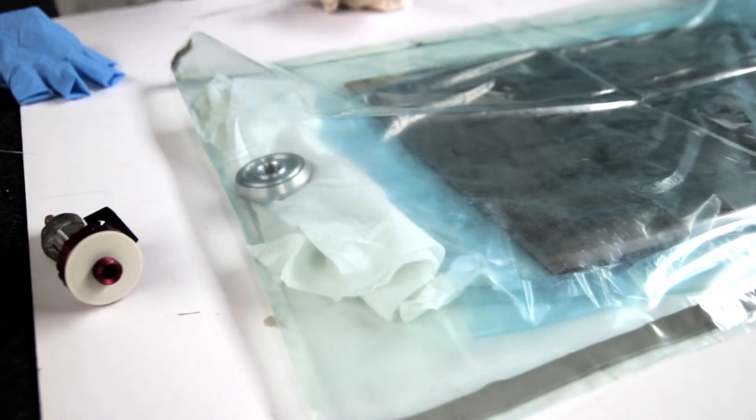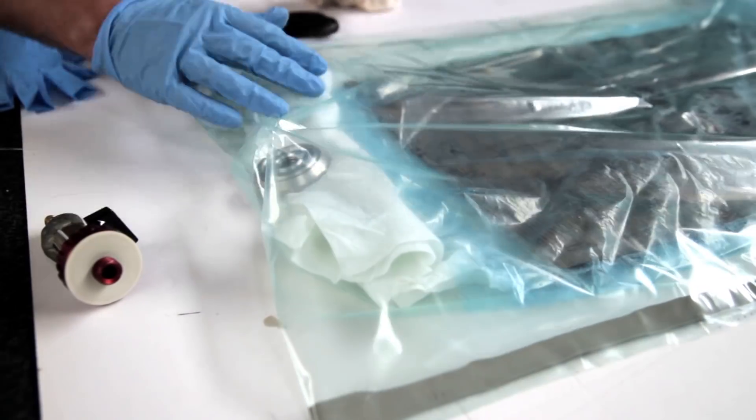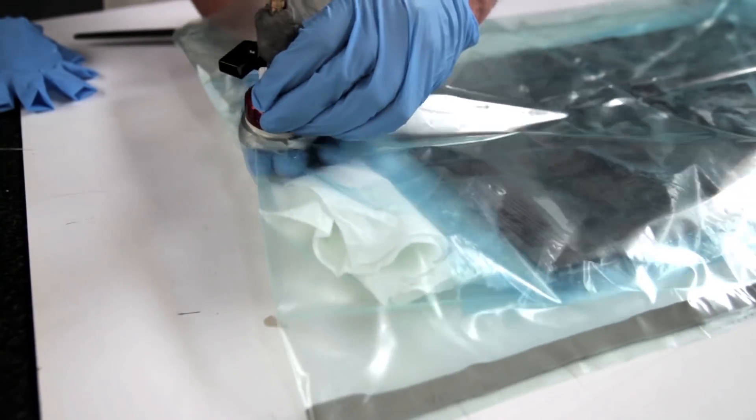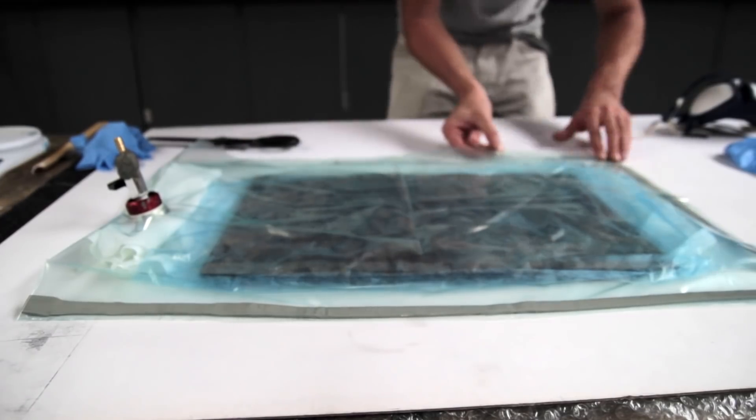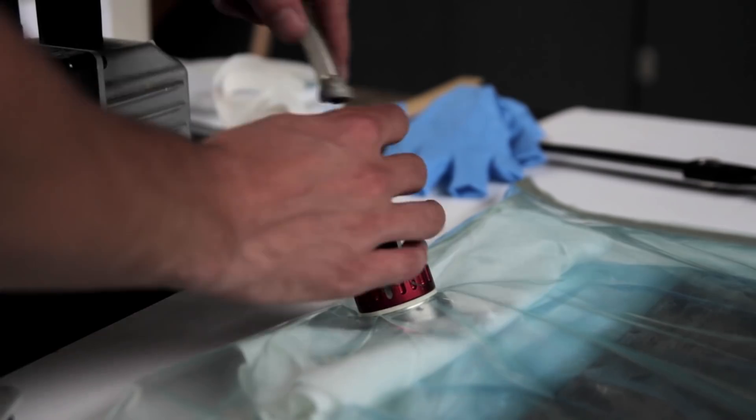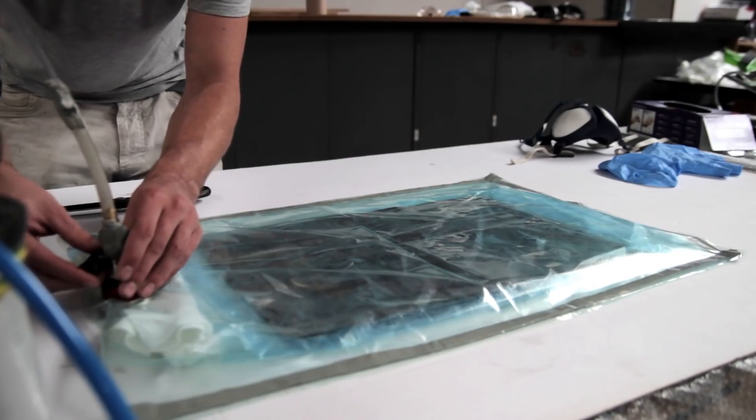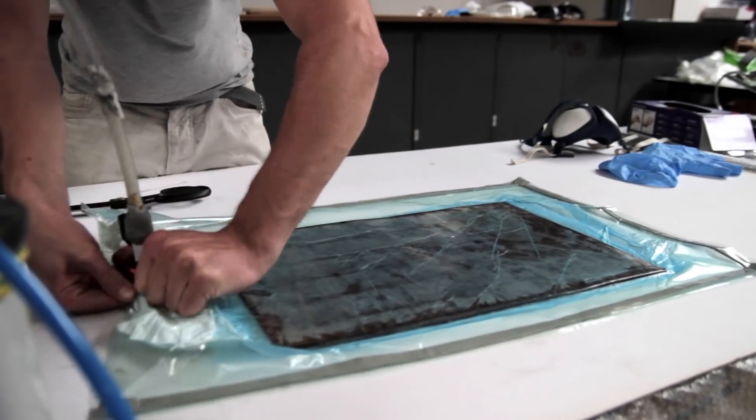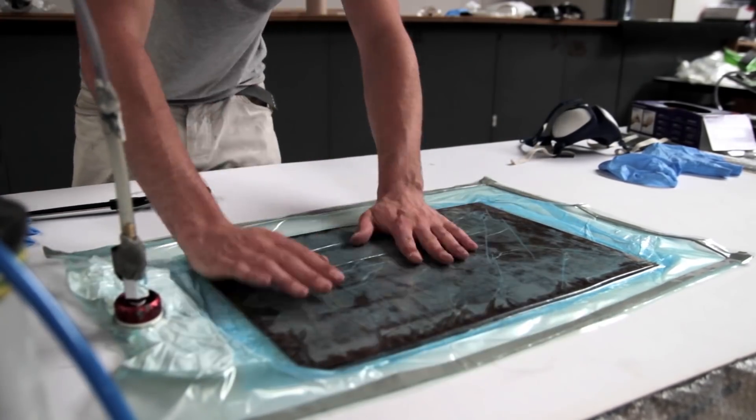Then everything is put into a vacuum bag. Here I'm just making a hole. This is the tube connector. It fits through the bag and will suck out all the air and compress all the layers strongly together. This is how I connect it to the vacuum pump. You can see it's a strong laminate being formed here with less air as possible in between.